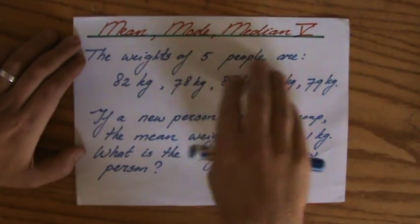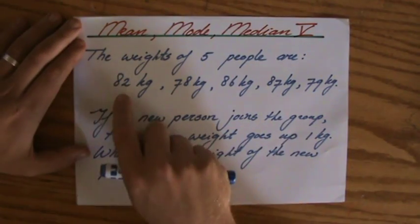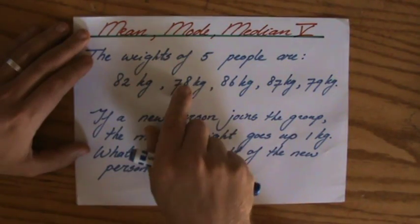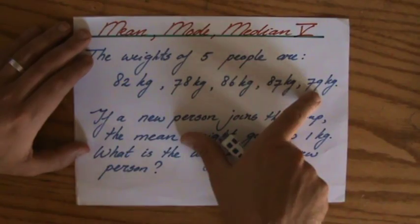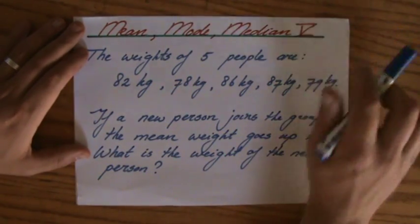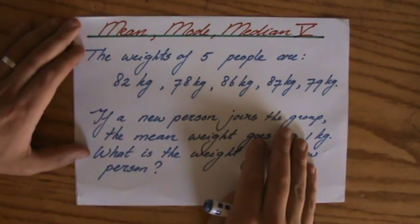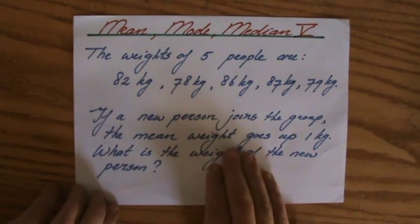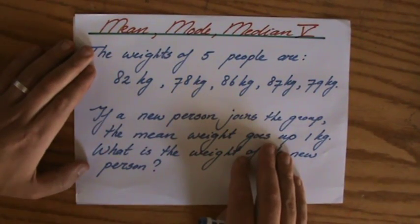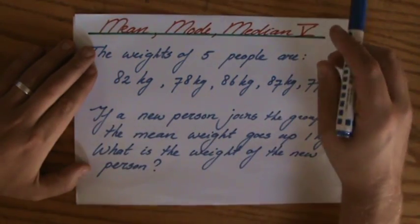The weights of five people are 82 kilos, 78, 86, 87, and 79 kilograms. But then a new person joins the group and the mean weight now goes up with a kilo. What is the weight of that new person?